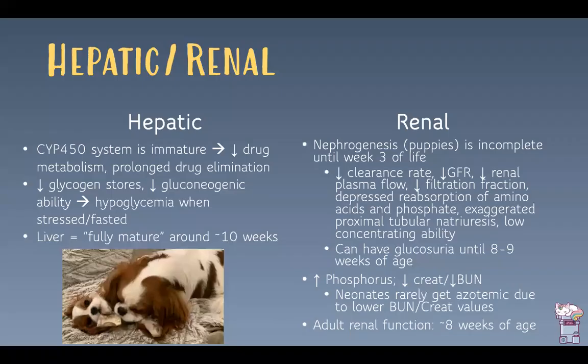Hepatically, the CYP450 enzyme system is immature, resulting in decreased drug metabolism and potentially prolonged drug elimination. Decreased glycogen stores and reduced gluconeogenesis can cause hypoglycemia when stressed or fasted. The liver isn't considered fully mature until around 10 weeks of age. Renally, nephrogenesis is incomplete until three weeks in puppies. Neonates have decreased clearance, GFR, renal plasma flow, filtration fraction, and depressed reabsorption of amino acids and phosphates. They have exaggerated natriuresis, low concentrating ability, and can even have glucosuria until eight or nine weeks of age.